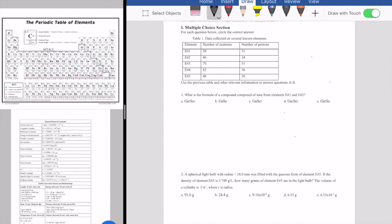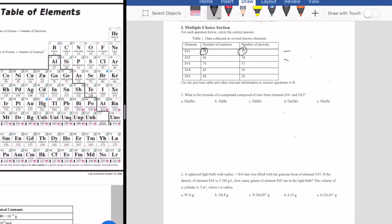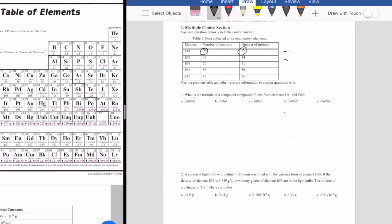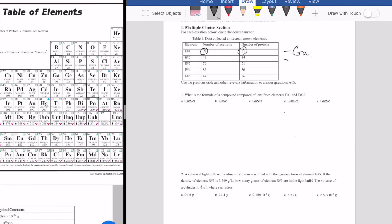So the first question here is asking us about the formula of a compound that's composed of ions from elements one and two. So let's take a look real quickly at what element one is. Element one has 38 neutrons and more importantly, it has 31 protons. So if we look at the periodic table right here, 31 protons corresponds to GA as element one, and then element two in this case has 34 protons, so that corresponds to the element SE here.